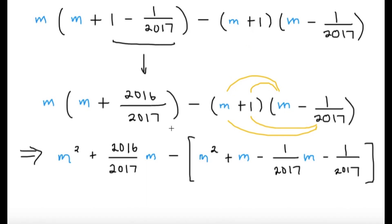Now all we have to do is just expand and maybe something nice is going to happen. So m times m, that's just m squared. And then m times 2016 over 2017, this is just the distributive property. So this will be the result of the first thing here. And then for the second part, we can just use FOIL or whatever method you'd like. So m times m gives me m squared. One times m gives me m. m times minus one over 2017 gives me minus one over 2017 m. And then lastly, one times minus one over 2017 gives me minus one over 2017.